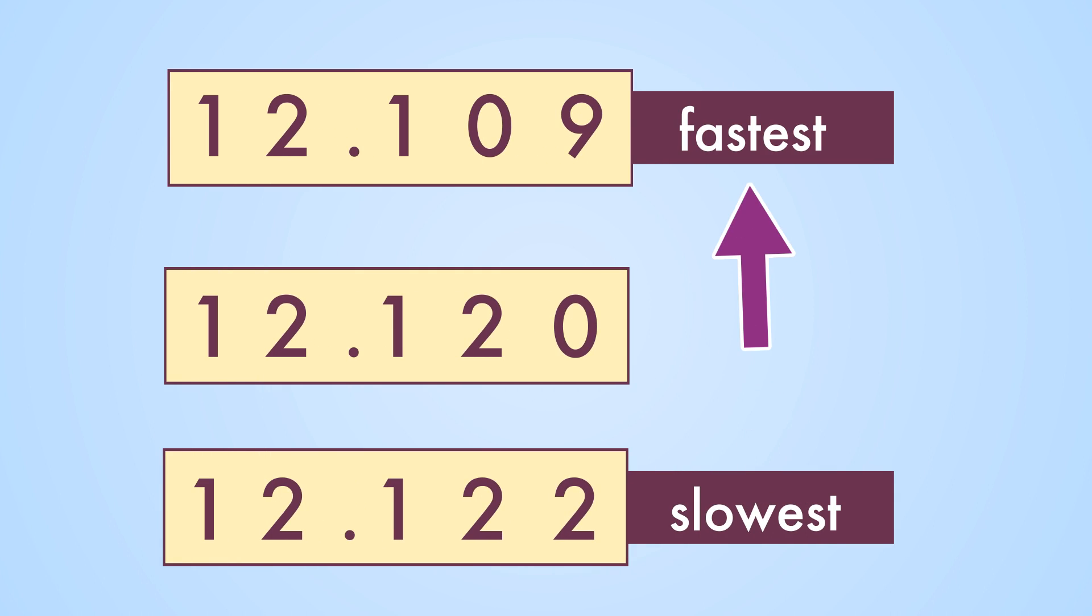This means the fastest runner completed the 100-meter dash in twelve and one hundred nine thousandths seconds.